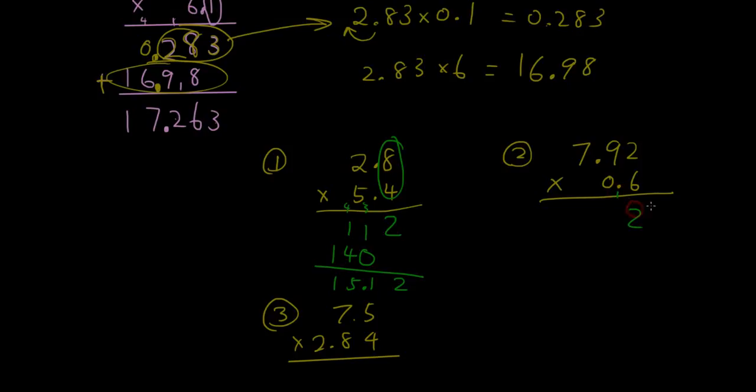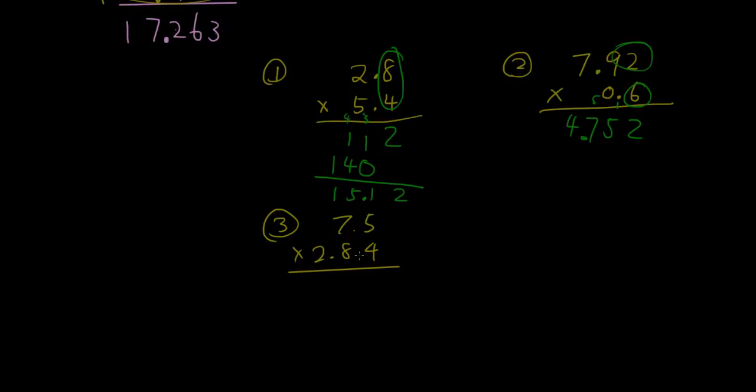Next one. 6 times 2 is 12. 6 times 9 is 54, plus 1 is 55. 6 times 7 is 42. 42 plus 5 is 47. And then we have 0 here, so ignore all that. 3 numbers after the decimal point, 1, 2, 3. The answer is 4.752.